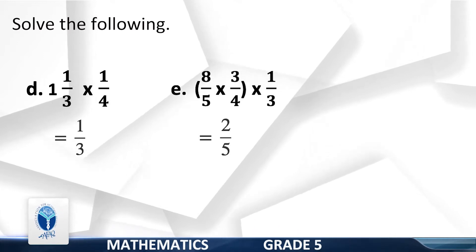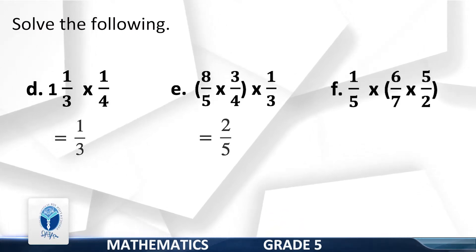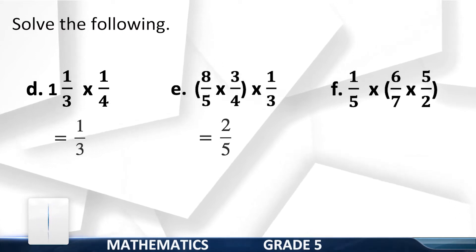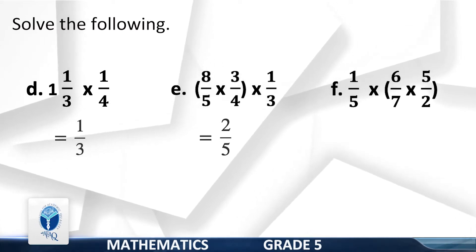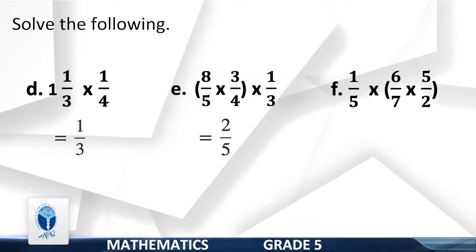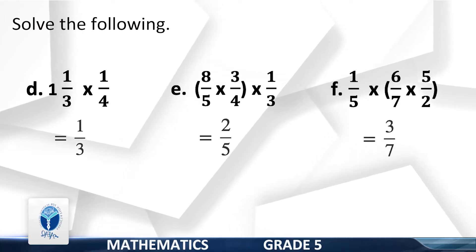F: 1/5 into (6/7 multiplied by 5/2). Yes, your answer is 3/7.